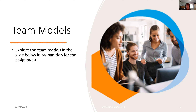Or you might look at Hackman's model of team effectiveness, which focuses on factors like clear goals, competent team members, and an enabling organisational context. Or the GRPI model — Goals, Roles, Processes, and Interpersonal Relationships — focusing on these elements to ensure team effectiveness.